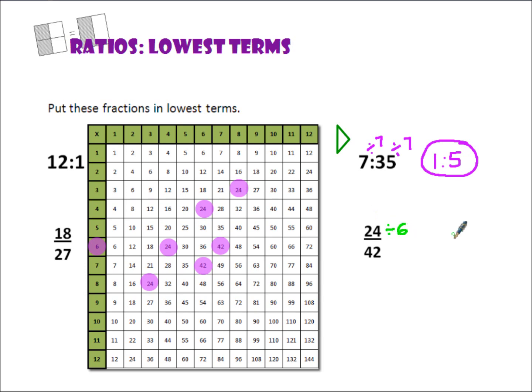24 divided by 6 is 4, and 42 divided by 6 is 7.